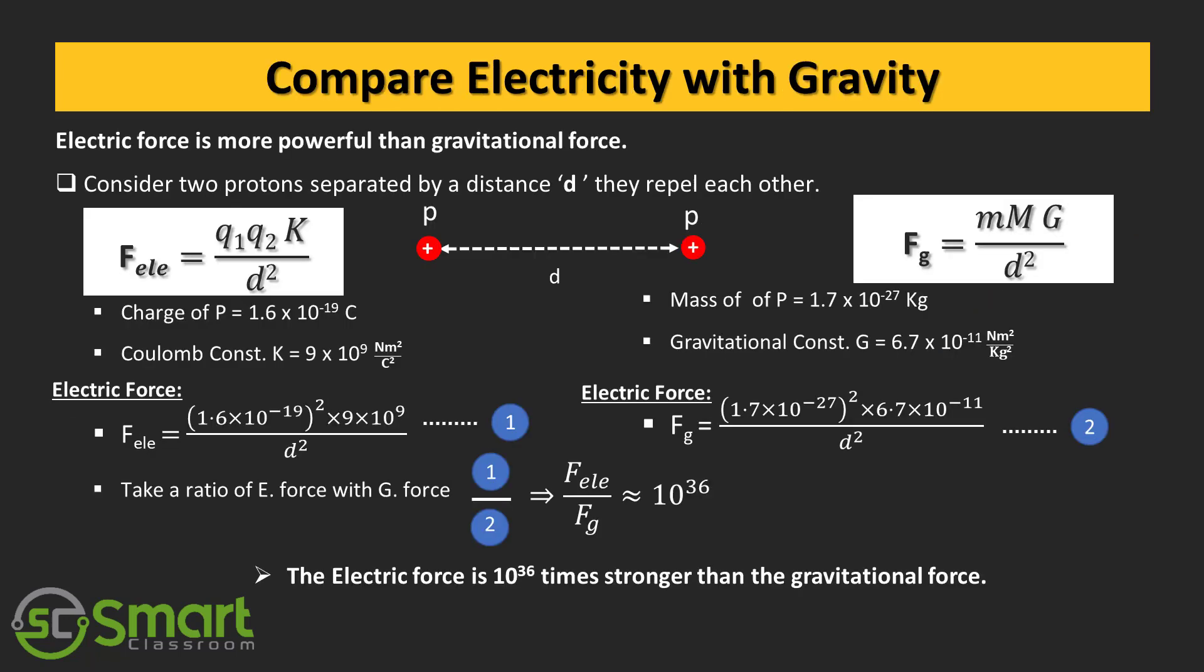Next topic: compare electricity with gravity. If you compare electricity with gravity, then you will realize that the electric force is more powerful than gravitational force. Consider two protons separated by a distance d. They repel each other. Force due to electric field equals q1 q2 k divided by d square. The charge of the proton is 1.6 into 10 to the power 19 coulomb. The coulomb constant k equals 9 into 10 to the power 9 newton meter square per coulomb square.